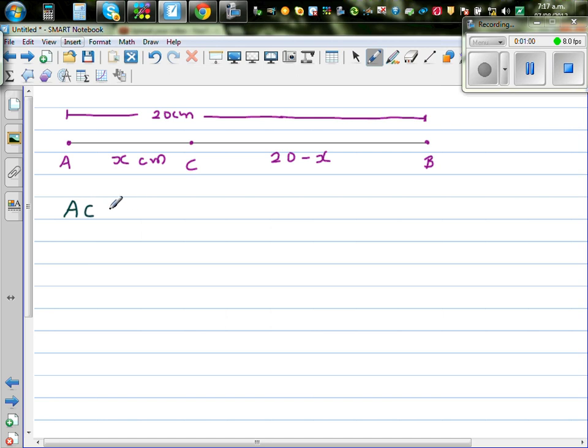These are simple concepts which students struggle to understand. So AC is x, and BC is 20 minus x. And AB is 20. So I hope you understand. AB, or AC plus BC. A to C plus B to C is equal to AB.